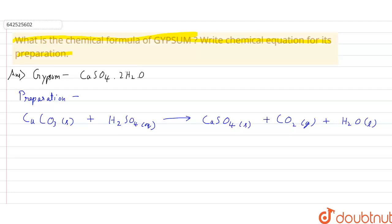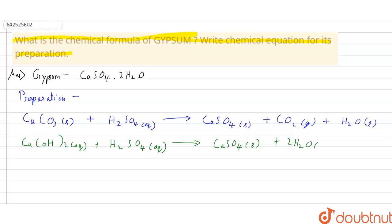The second equation is: Ca(OH)₂ (aqueous) + H₂SO₄ (dilute sulfuric acid) → CaSO₄ (solid) + 2H₂O (liquid). This is the chemical equation for the preparation of gypsum.